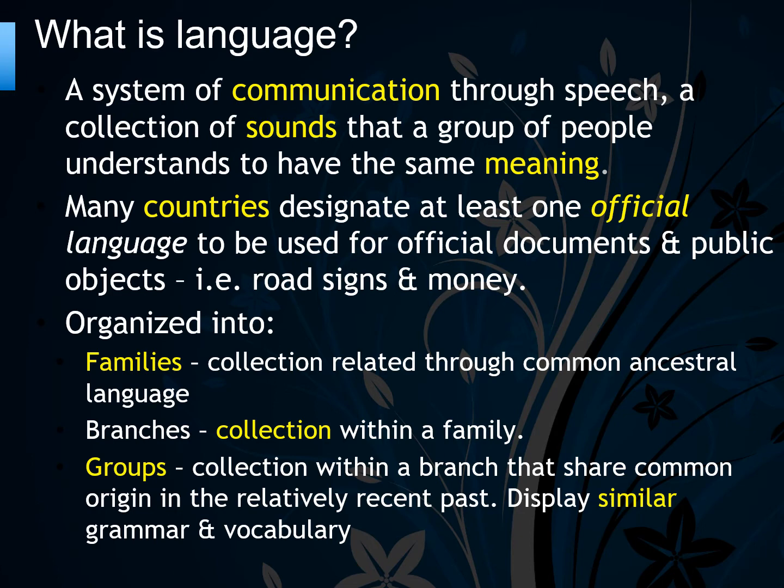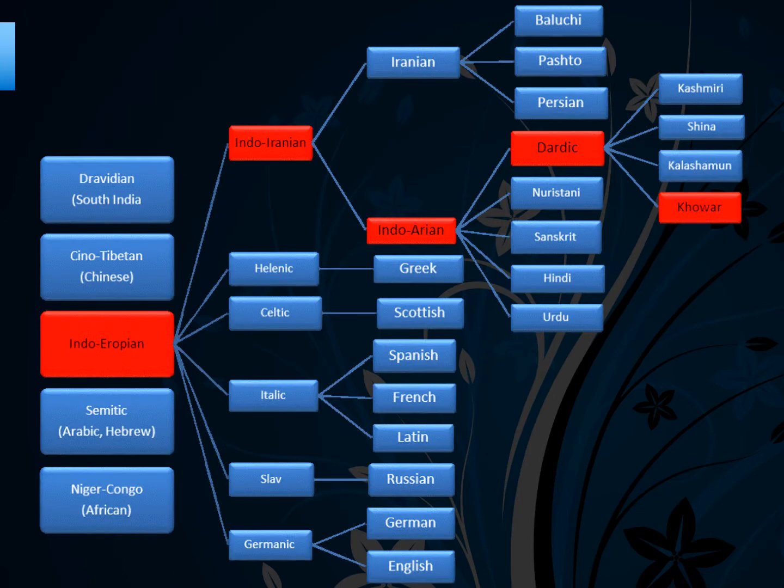Here we see the Indo-European language family. The Indo-European is the language family. Then we have various branches: Indo-Iranian, Celtic, Slavic, Germanic, and so forth.